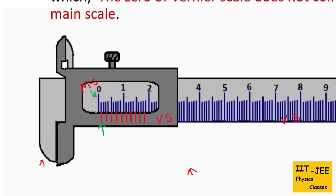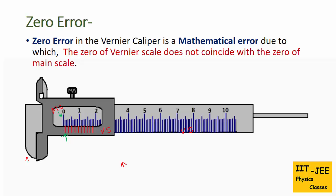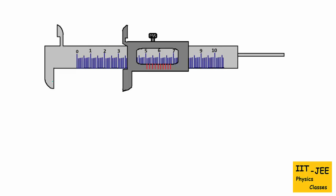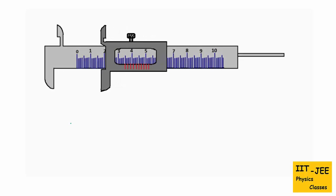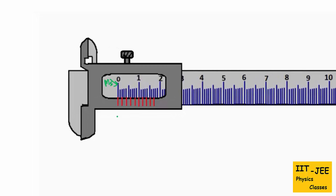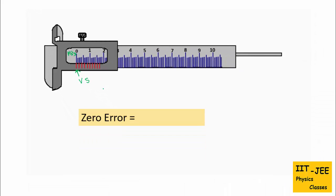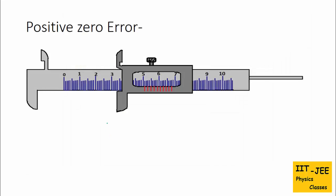Whenever we find a zero error in a vernier caliper, we need to calculate it so that we can correct the final result. There are three cases for zero error. In the first case, when we bring the two jaws together, the zero of the main scale coincides exactly with the zero of the vernier scale — they are exactly in the same line — so this vernier caliper is free from zero error.